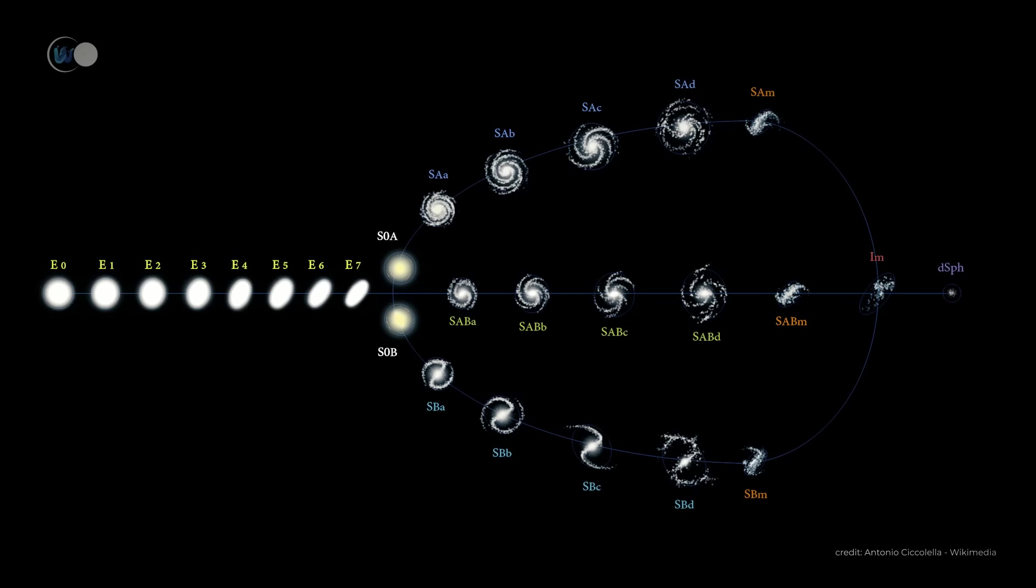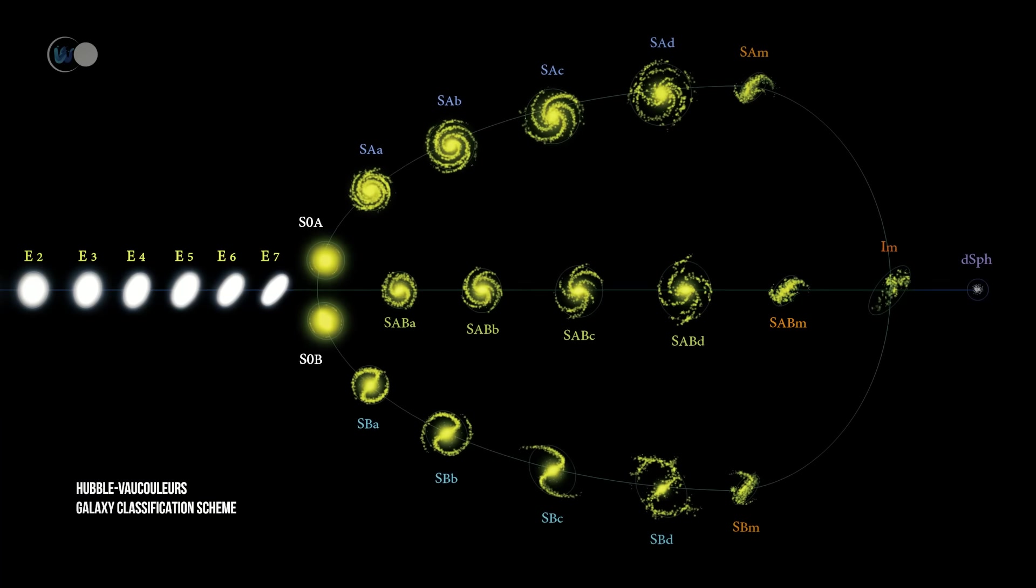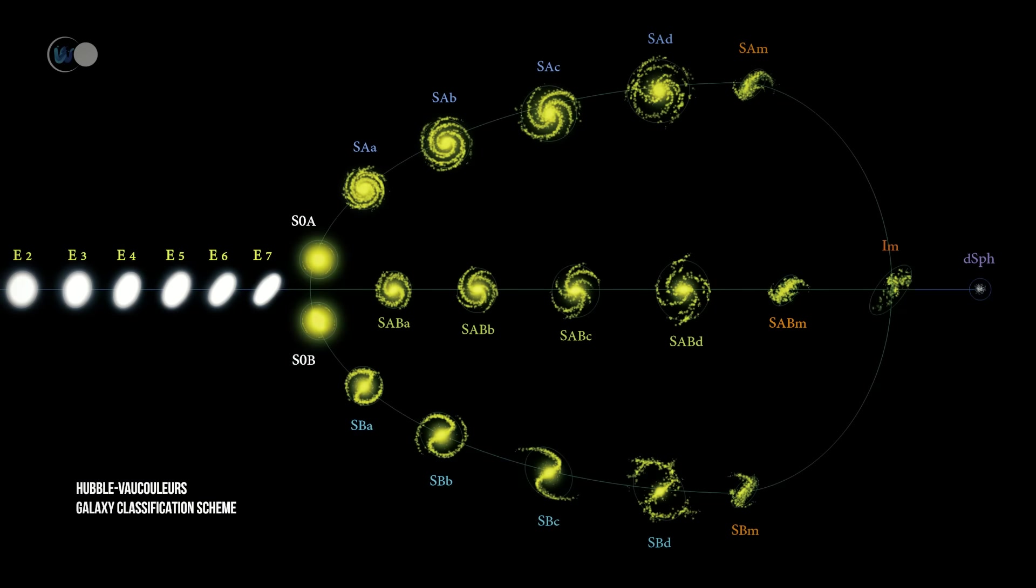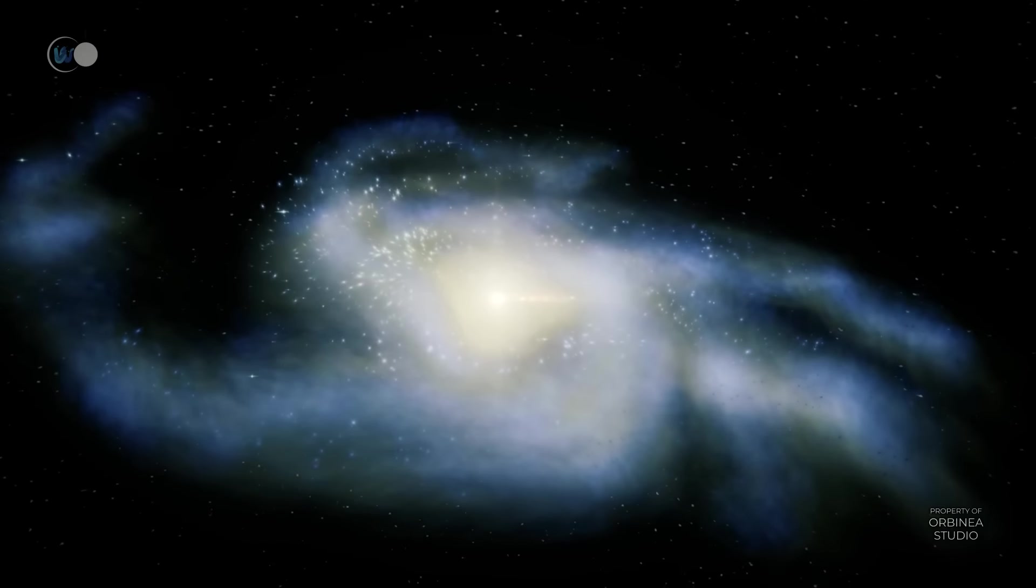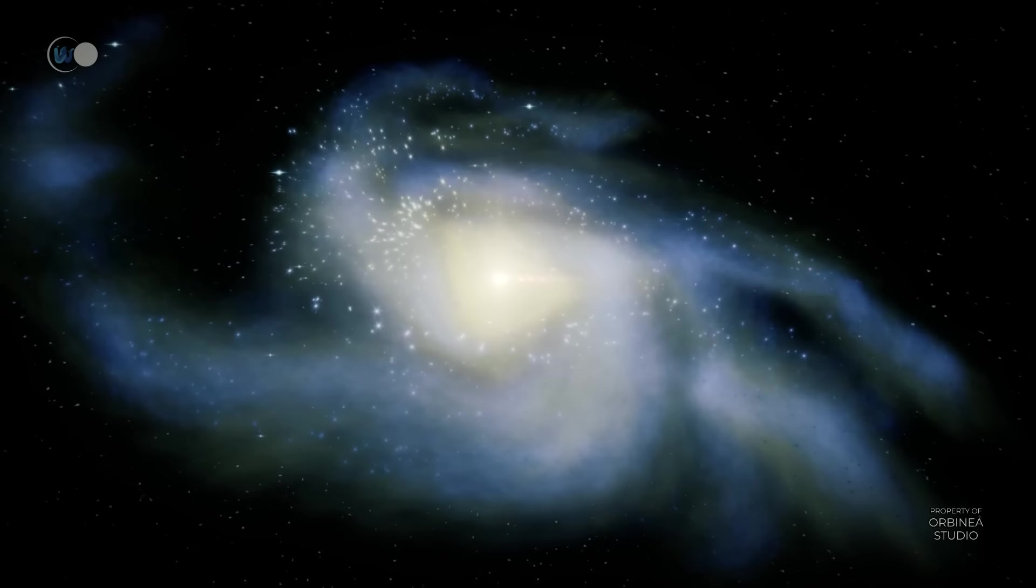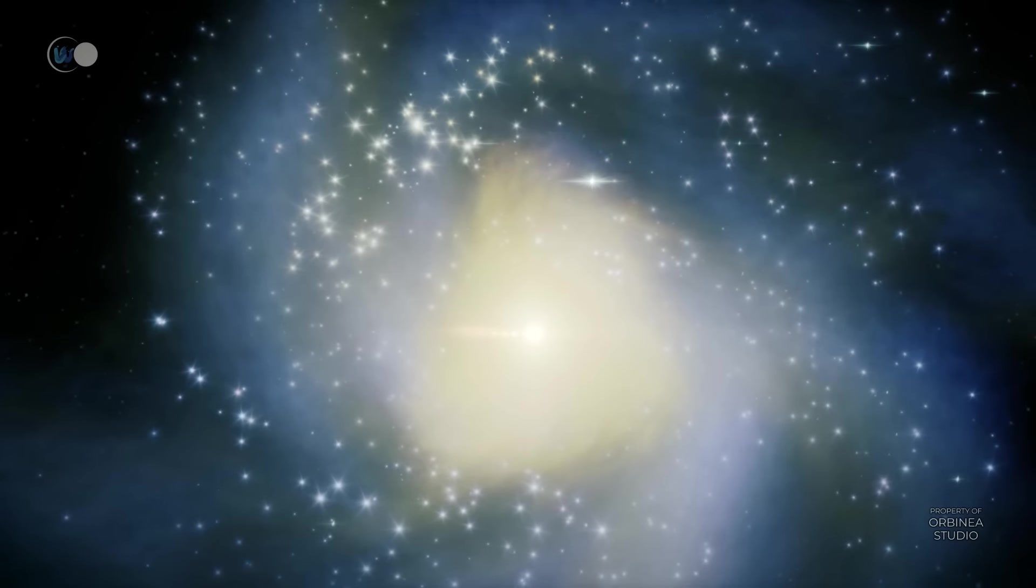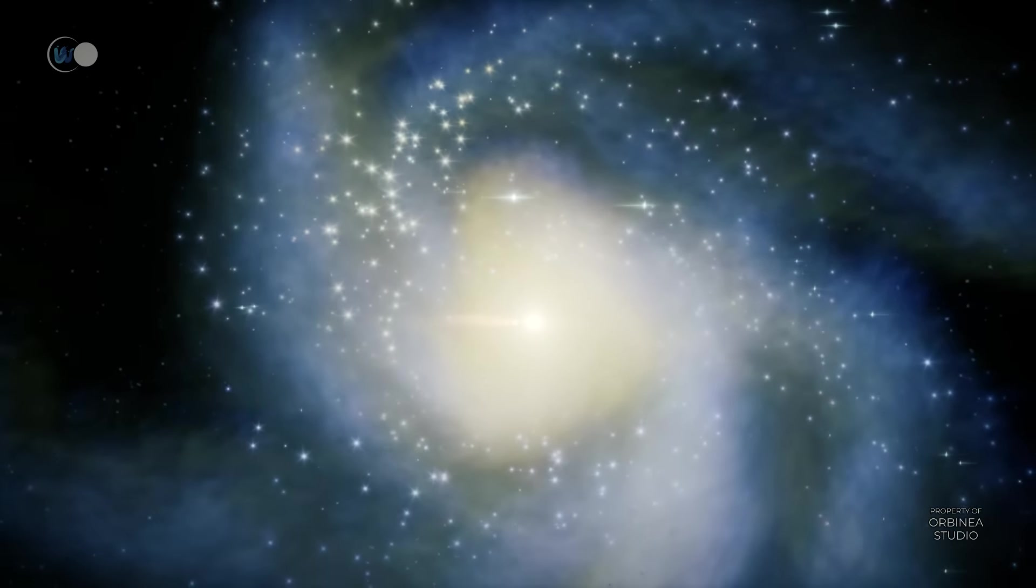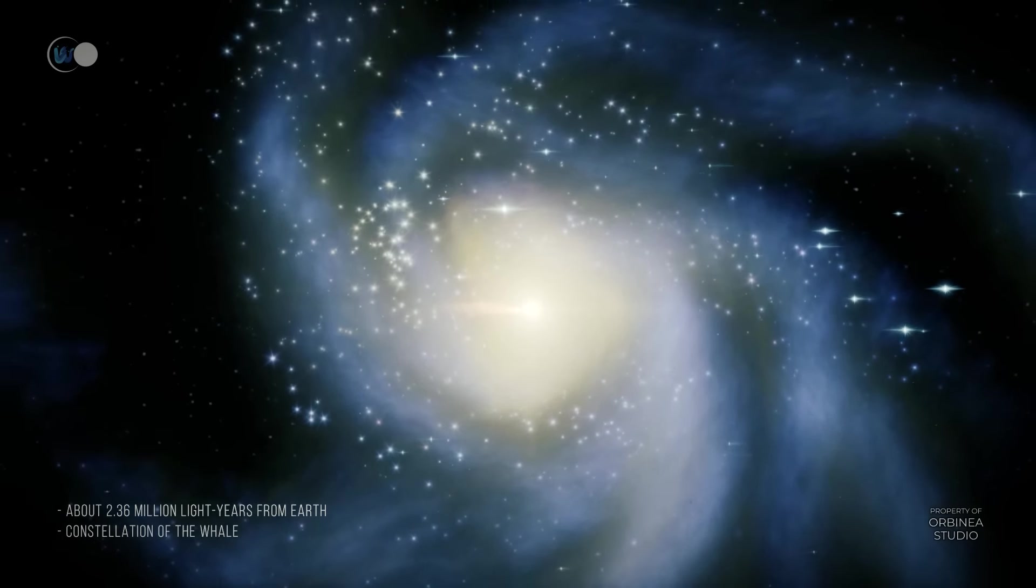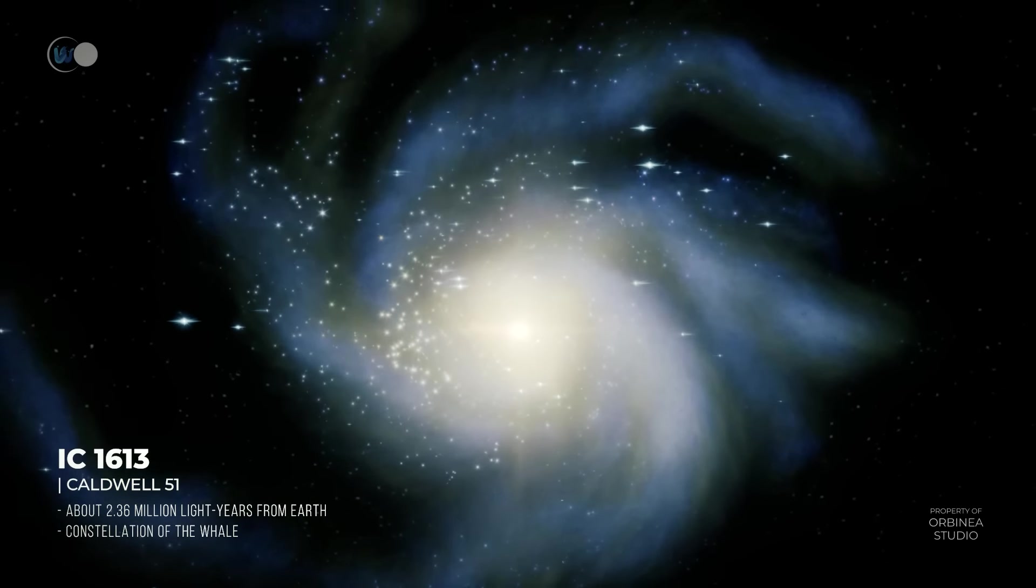The first are spiral galaxies, like the Milky Way. These are the most numerous galaxies in the universe. They contain large quantities of gas and dust, as well as a disk containing young stars and a bulge containing old stars. This disk is often extended by one or two spiral arms, and is filled with dust and gas stars.